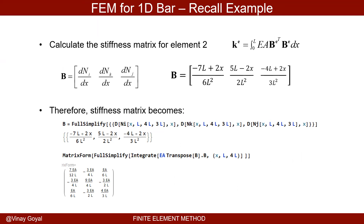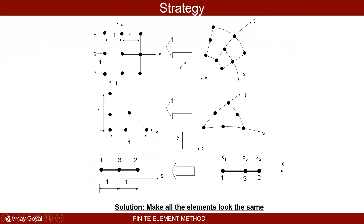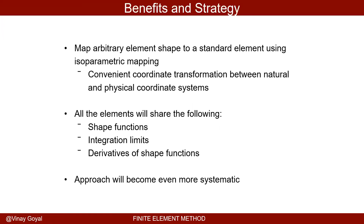Let's step back and summarize. Previously, the integral limits were different for each element, the shape functions and their derivatives also varied element to element — not convenient for a systematic approach. Now with the isoparametric mapping, every element has the same shape functions, the same integration limits from −1 to 1, and the same derivatives of shape functions. Only the Jacobian J carries the element-specific geometric information.